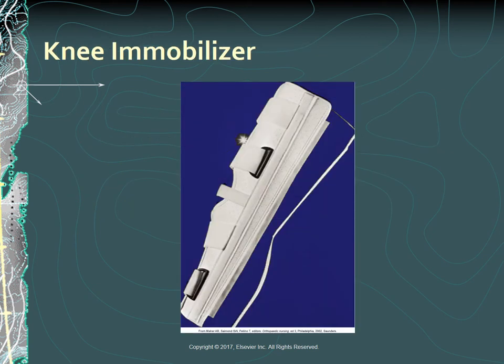Prefabricated knee and ankle splints and immobilizers are used in many settings. This type of immobilization is easy to apply and remove, which permits close observation of an affected joint for signs of swelling and skin breakdown. Depending on the injury, removal of a splint or immobilizer facilitates range of motion of the affected joint and faster return to function.